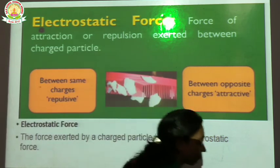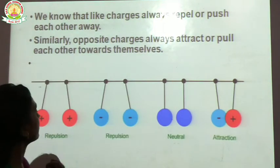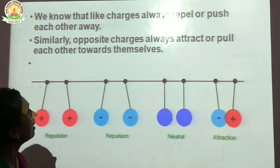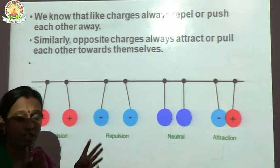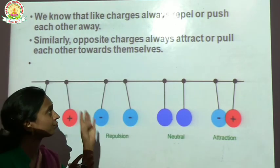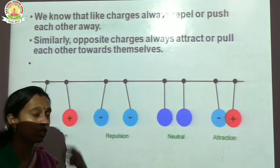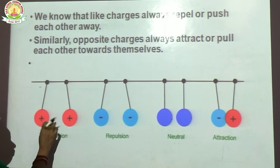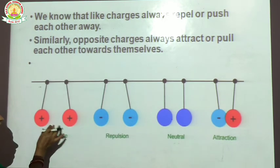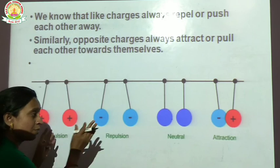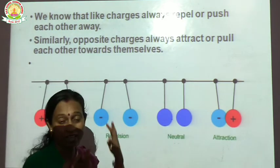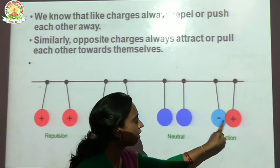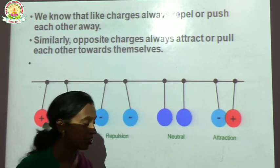We know that like charges always repel, and opposite charges always attract. Like charges repel each other, and opposite charges attract each other. For example, two positive charges repel each other; two negative charges — same charges — also repel each other. A neutral object has no activity. And opposite charges attract each other because they have different charges.